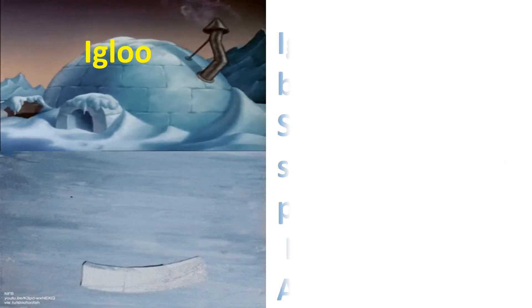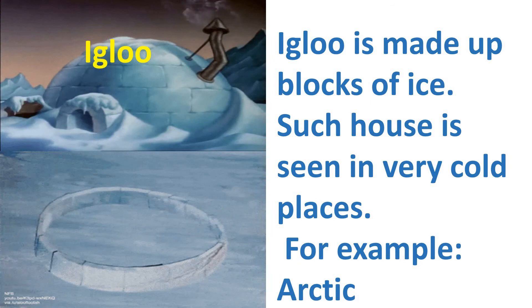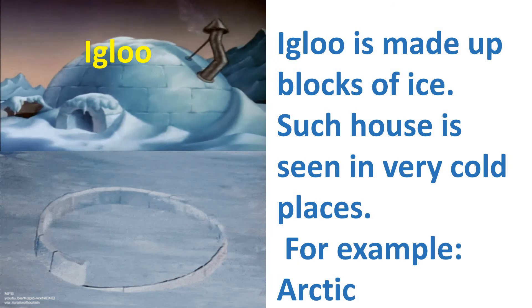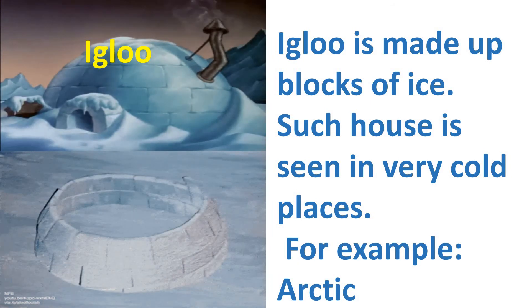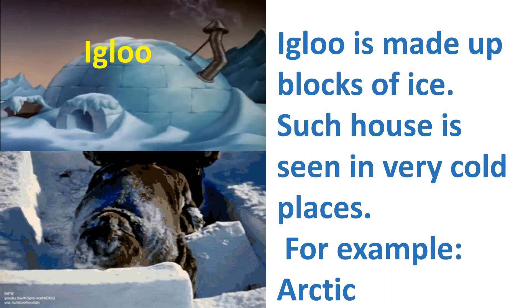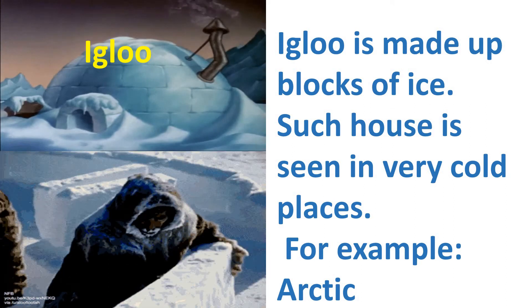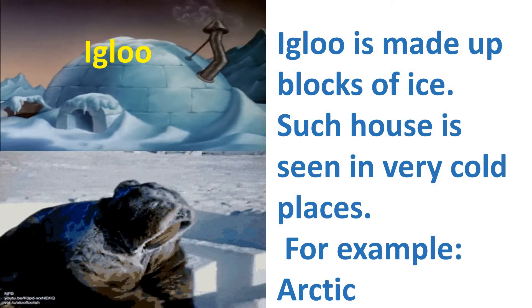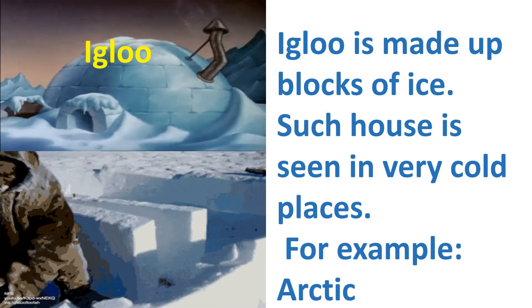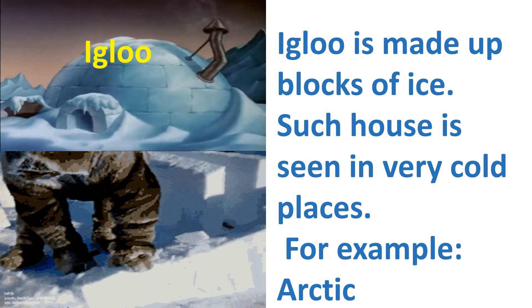We have also known about igloo. An igloo is made up of blocks of ice. Such houses are seen in very cold places, for example the Arctic. You can see how people make their houses out of ice.